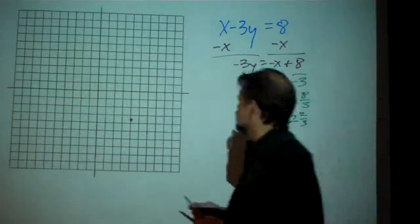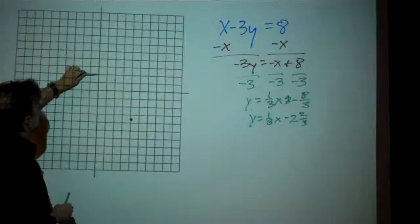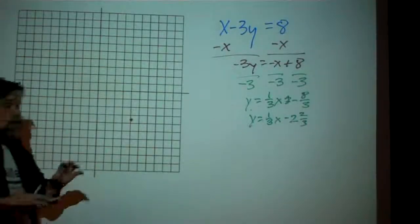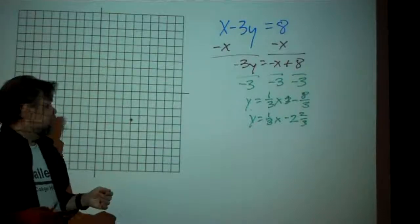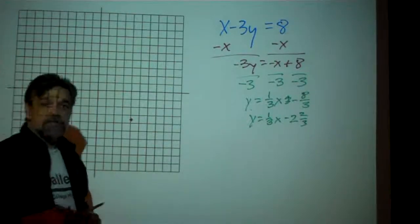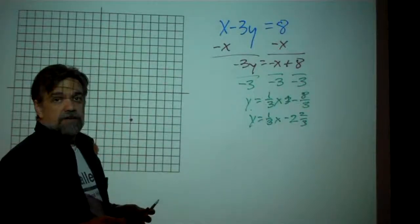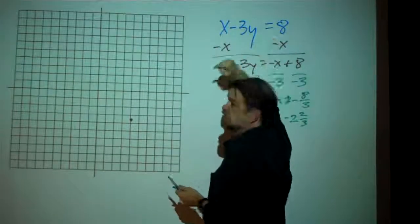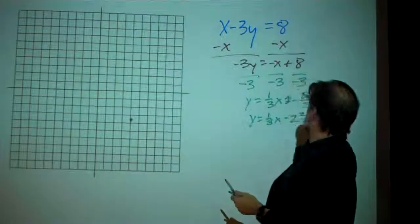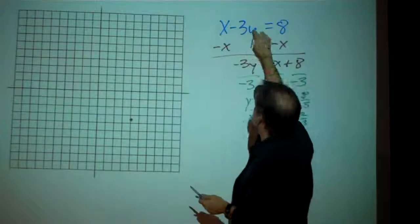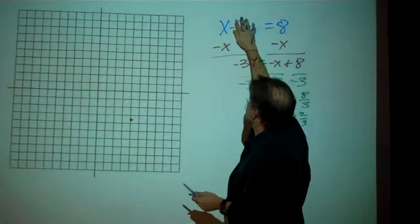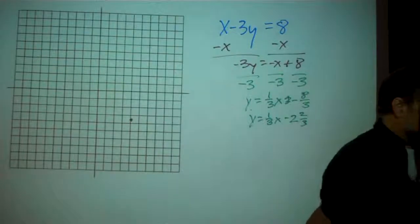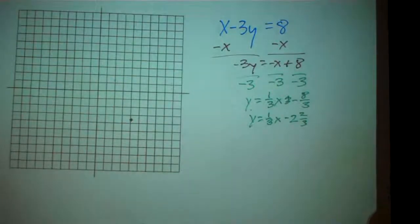Now, I'm not looking forward to graphing this, because 2 and 2 thirds, see, that's going to be 1, 2, and 2 thirds is going to be like right around there. But it's hard for me to get exactly what that is. One nice thing about the standard form of the equation, maybe it's the only nice thing, is it's very easy to get both the y-intercept and the x-intercept. The y-intercept, you would get by just setting this equal to 0, and you'd have negative 3 times y equals 8. So y equals 8 divided by negative 3, or negative 8 thirds. And the x-intercept, we can get by plugging 0 in for y. So we get x equals 8.